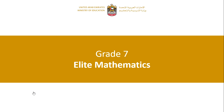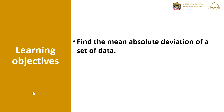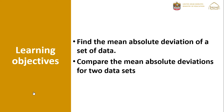Mathematics Chapter 12, Statistics and Probability, Lesson 3: Mean Absolute Deviation. Learning objectives: find the mean absolute deviation of a set of data, and compare the mean absolute deviations of two data sets.